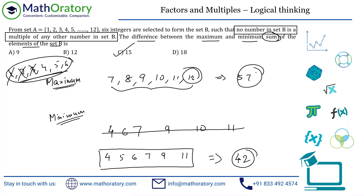The difference between maximum sum (57) and minimum sum (42) is 15. For the maximum part, just take the highest six — the constraint is automatically satisfied. For the minimum, some trial and error is needed. If you see this in an exam, consider marking it for review and solving easier questions first. But it is a very interesting problem. Thank you for joining.